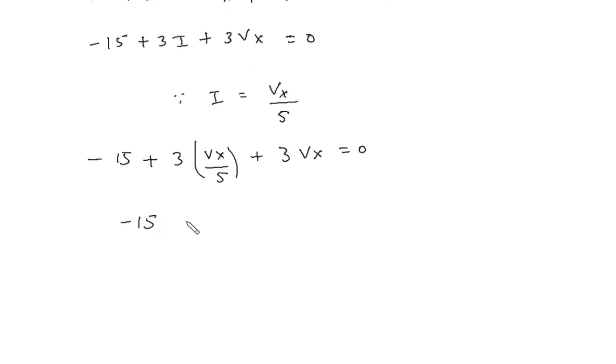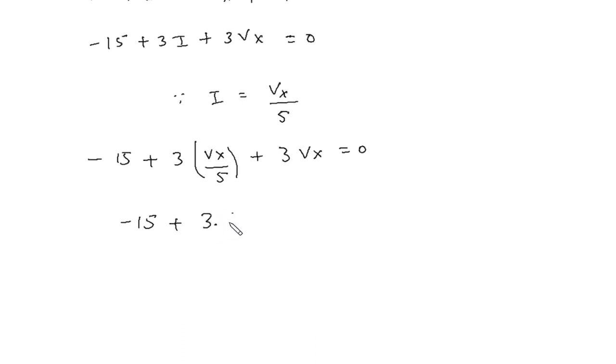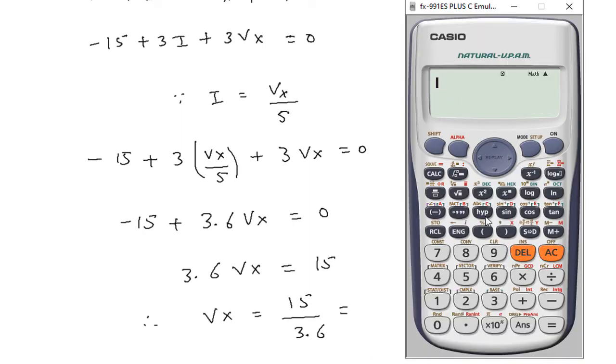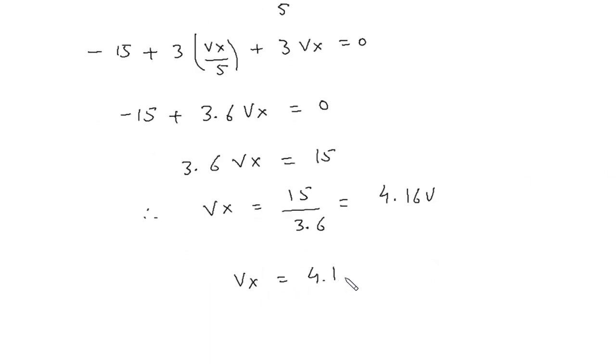This will be minus 15 plus 3.6Vx is equal to 0. So 3.6Vx is equal to 15. Therefore, Vx is equal to 15 by 3.6, which equals 4.16V.